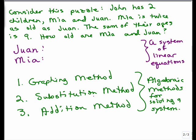So we're going to consider this puzzle again. John has two children, Mia and Juan. Mia is twice as old as Juan. The sum of their ages is nine. How old are Mia and Juan? We need to introduce some variables for the age of Juan and the age of Mia. I'm not writing age of Juan, but when I write Juan, I'm just going to call it X.